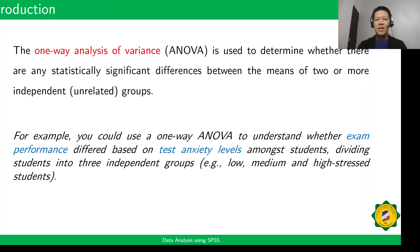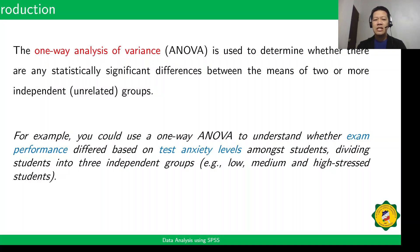The One-Way Analysis of Variance, or ANOVA, is used to determine whether there are any statistically significant differences between the means of two or more independent groups. For example, you could use a One-Way ANOVA to understand whether exam performance differed based on test anxiety levels among students, dividing students into three independent groups: low, medium, and high-stressed students.